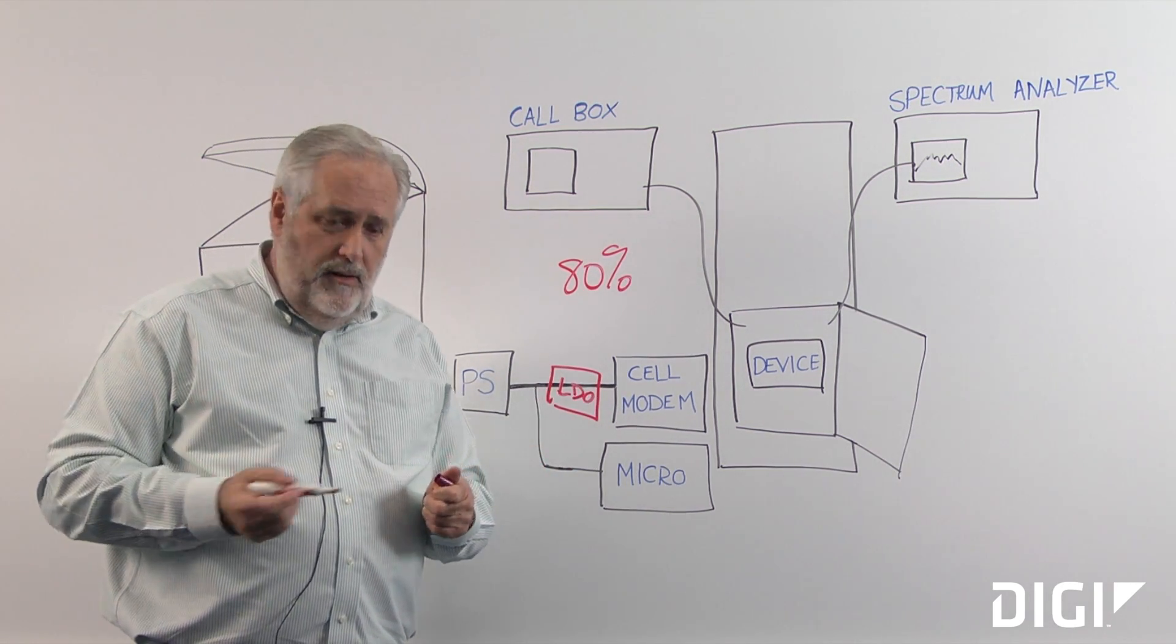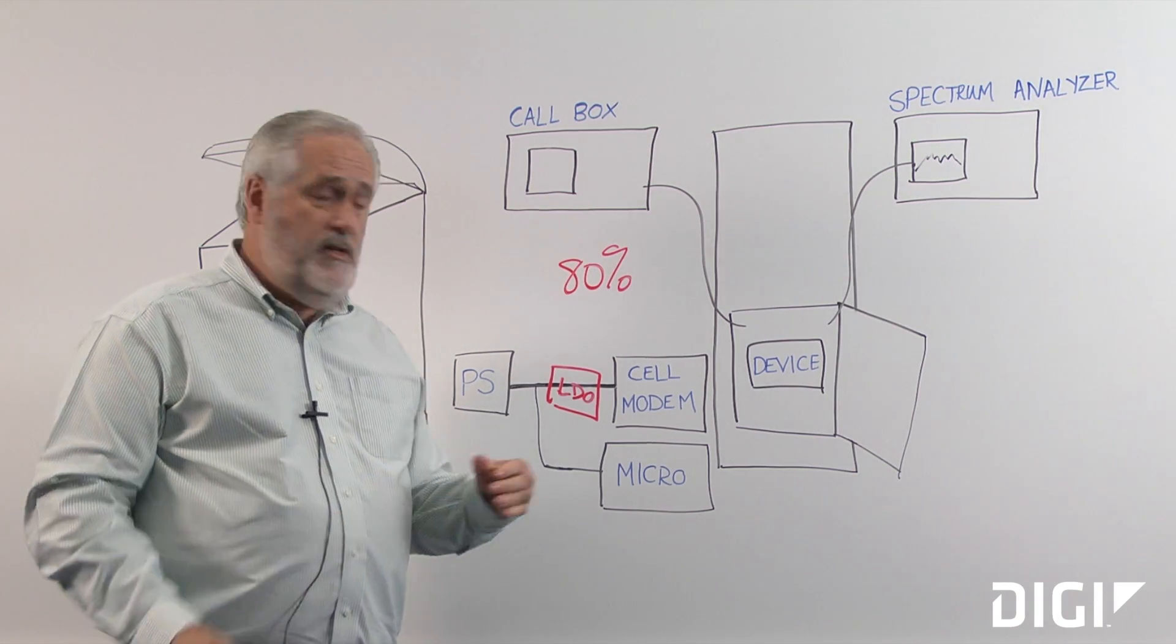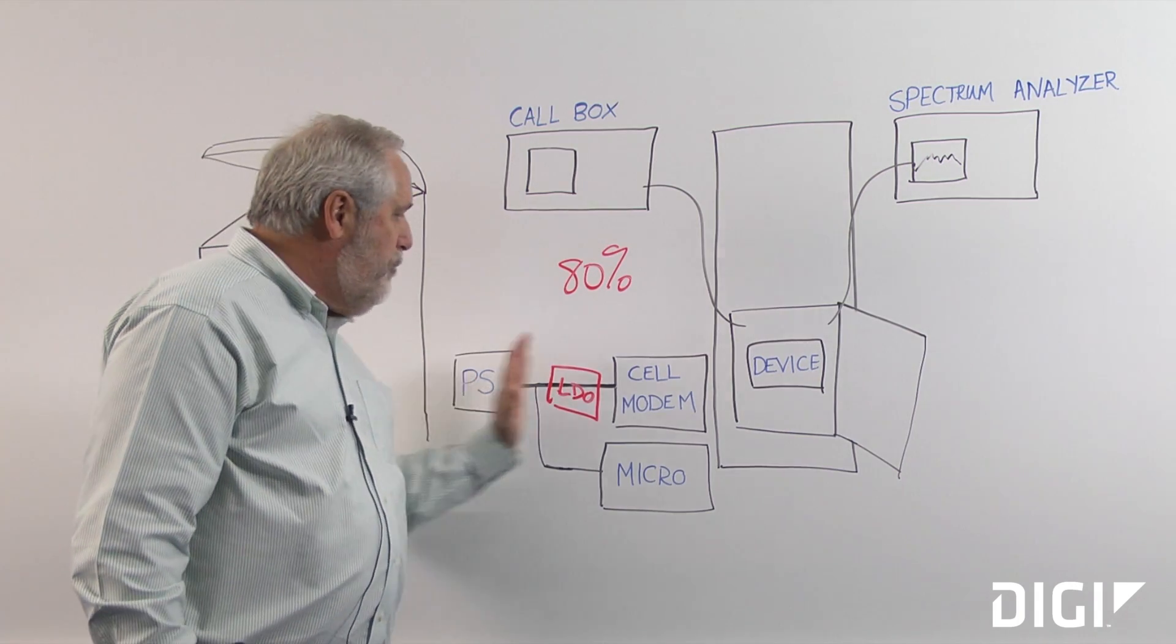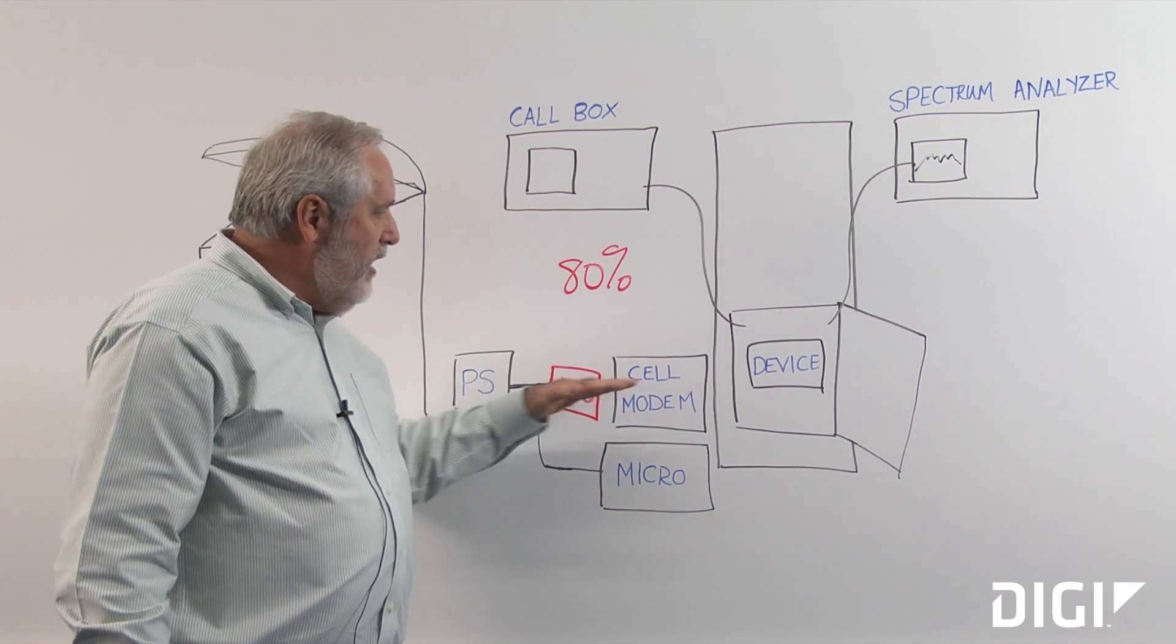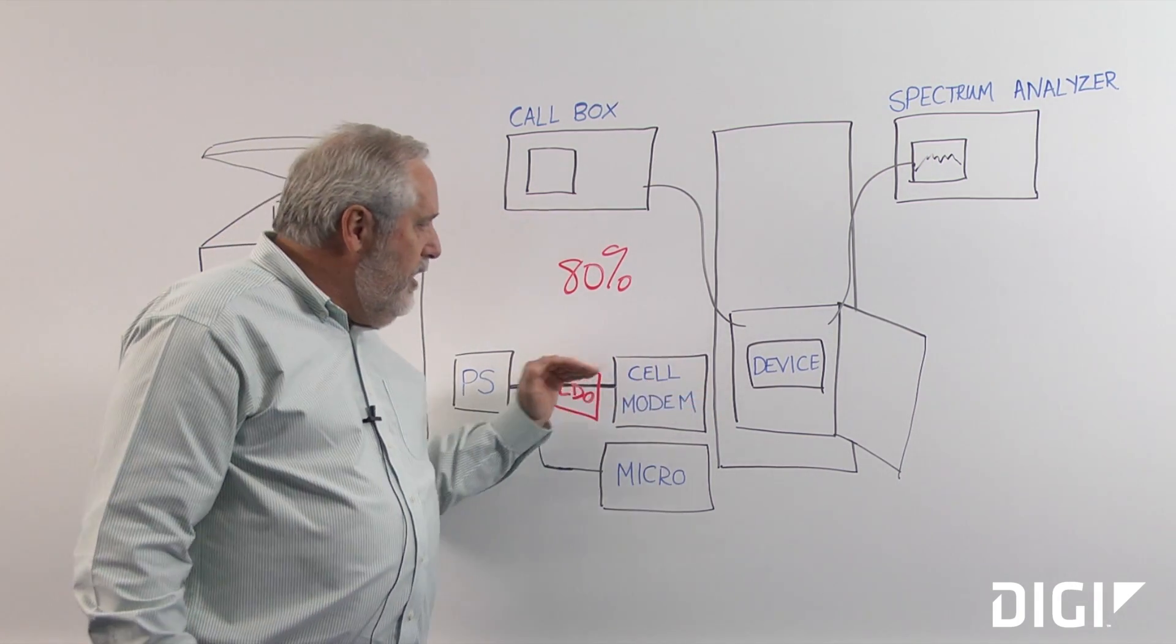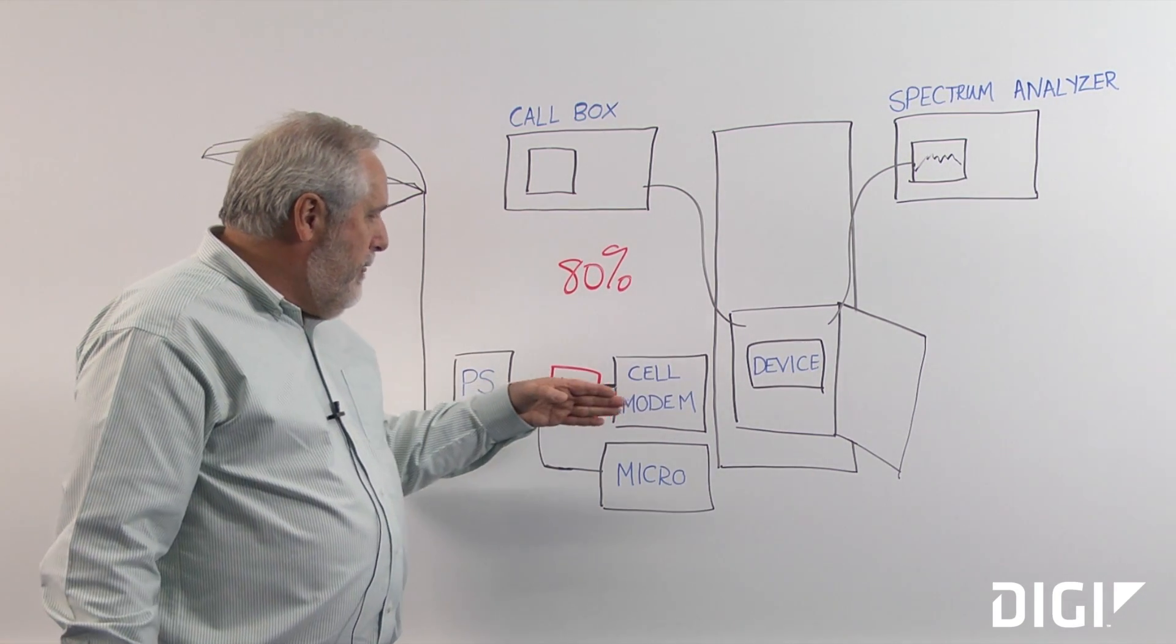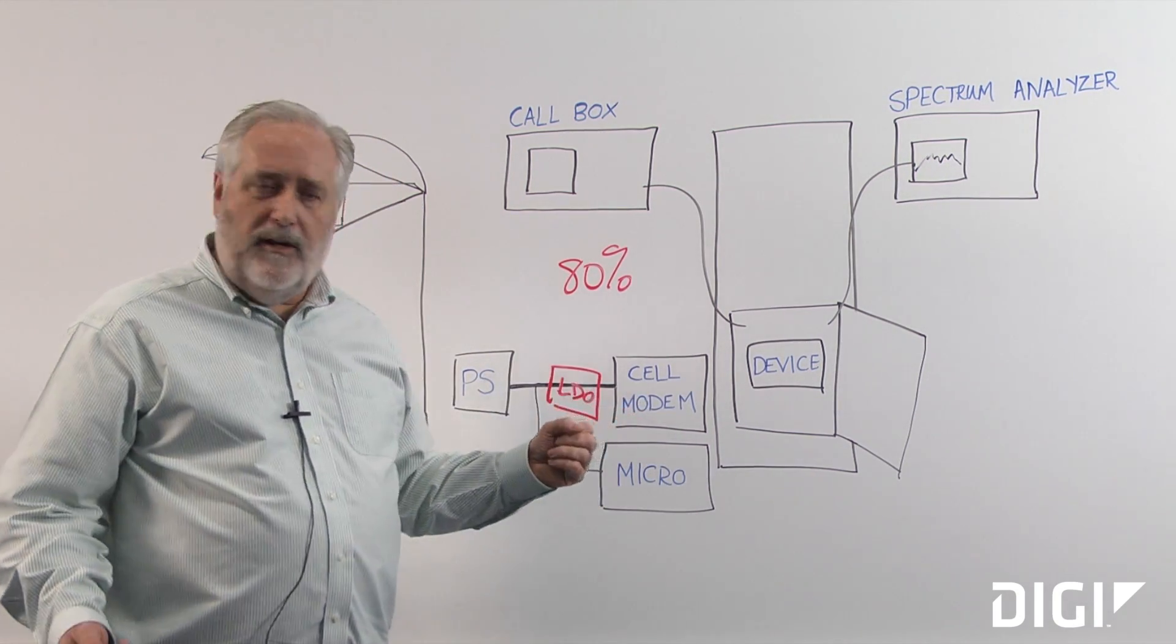Because in the intended radiations piece of the test, where the unit is actually transmitting, signals were being picked up by the power supply and then pushed back through the power system, causing the cell modem then to transmit in a non-compliant manner.